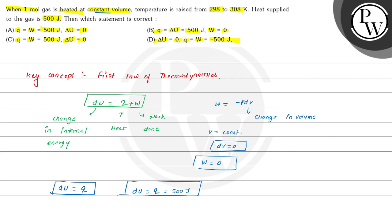Now we can match our options. According to the options, work done equals 0 and internal energy change and heat equals 500 Joule. This is given in option B. Hence option B is the correct choice for this question.